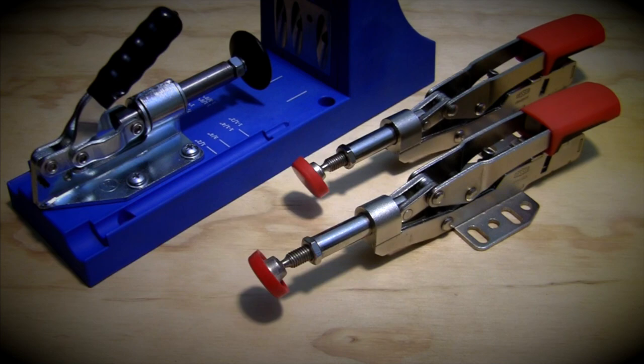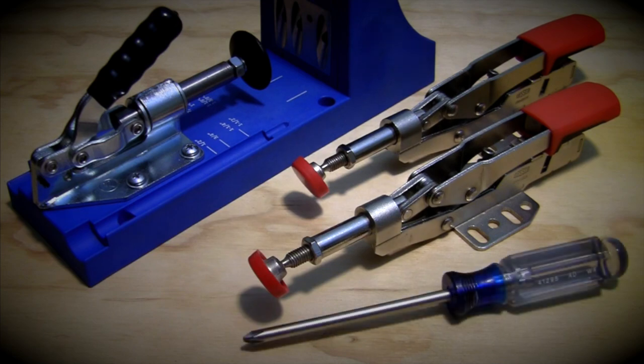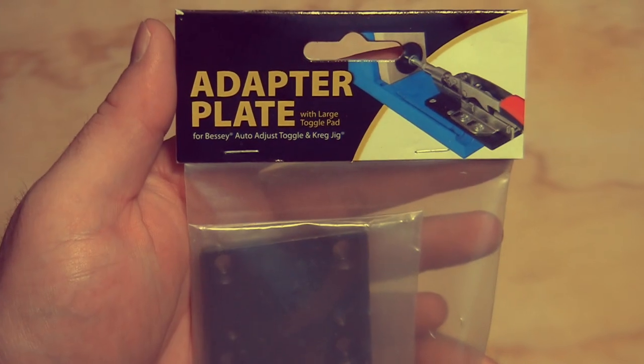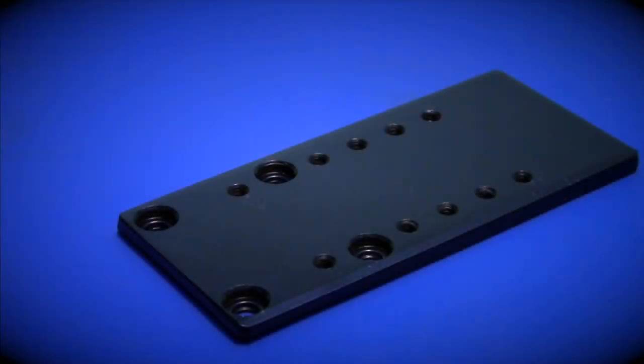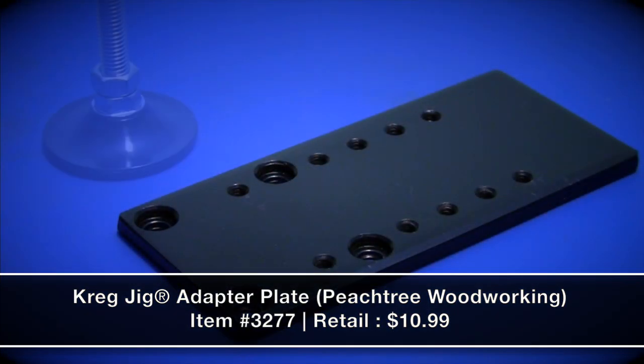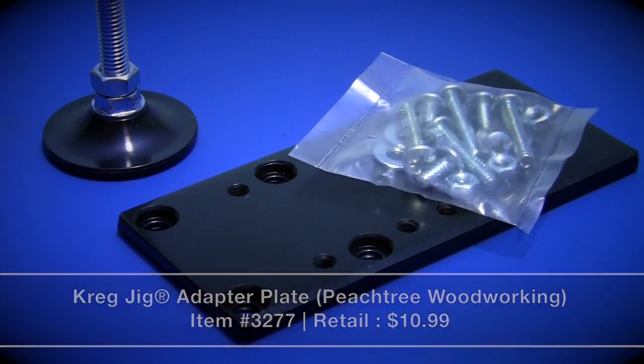Now along with the K4 and Bessey toggle clamp you'll need a Phillips head screwdriver with a little bit of help from an adapter kit that includes the plate that attaches to your K4 jig, a large pad for mounting on your toggle, and all the necessary mounting hardware.